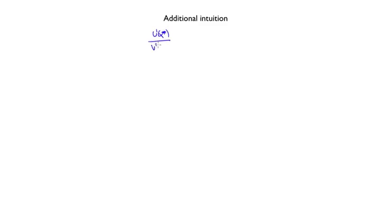Now consider some additional intuition for why the interior solution must satisfy the condition u'(x*) divided by v'(y*) equals the ratio of the prices P/Q. Remember a key property of an optimum: you cannot carry out a small deviation from it within the feasible set and make your total payoff bigger. To see why, suppose you were at x and consider a small change delta x greater than zero — that is, increasing x by a tiny bit. What is going to be the change in payoff?